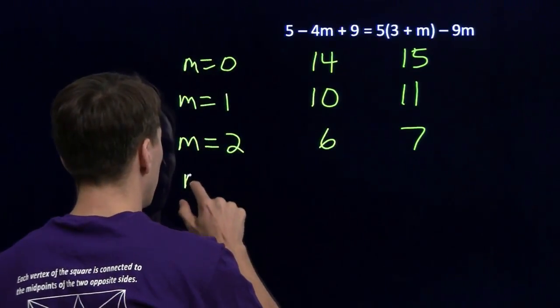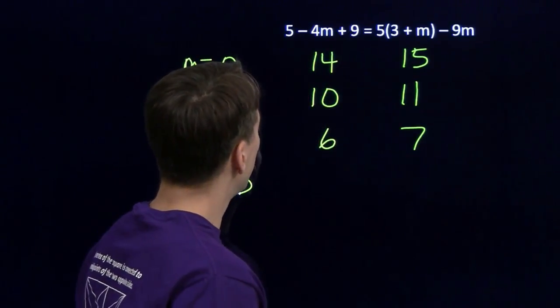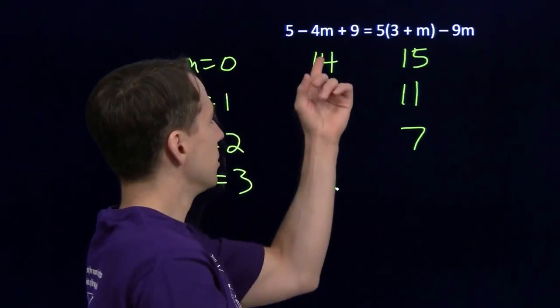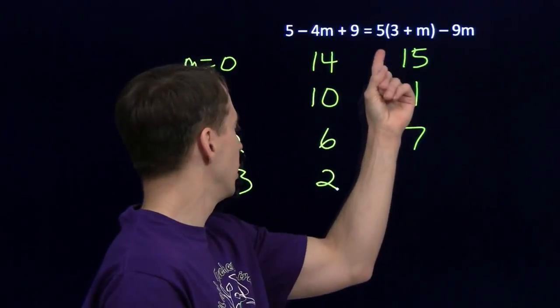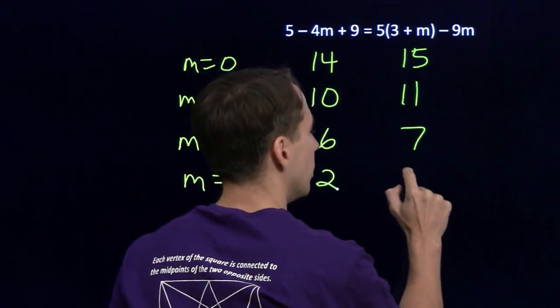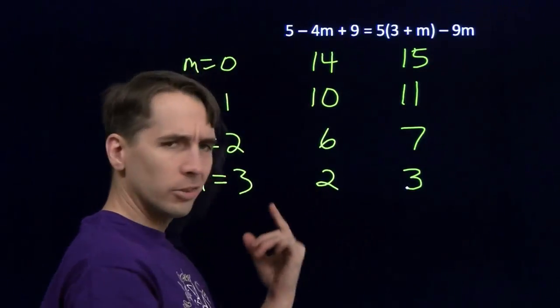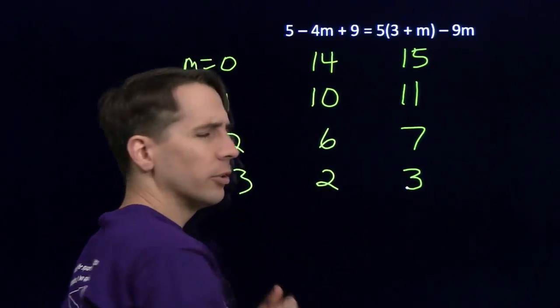What's going on? All right, m equals 3. We know that 0, 1, and 2 don't work. Let's try 3. Put in 3, 5 minus 12, that's negative 7, plus 9 is 2. I'll put 3 in over here, 3 plus 3 is 6, times 5 is 30, and then I'll subtract 27. Hey, wait a second. Once again, 2 is not equal to 3, but each time, the right side is ending up 1 greater than the left side.